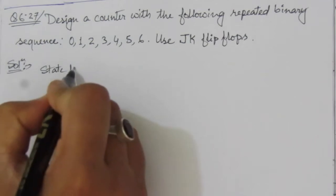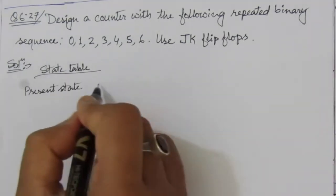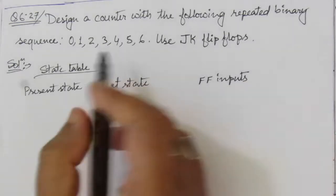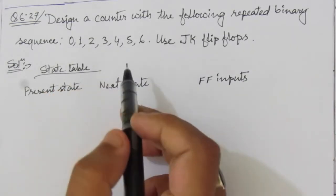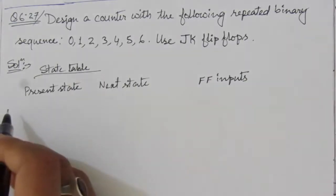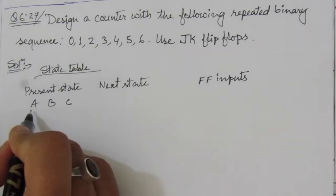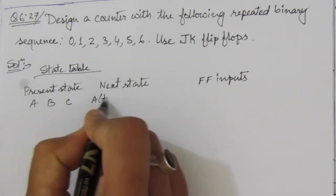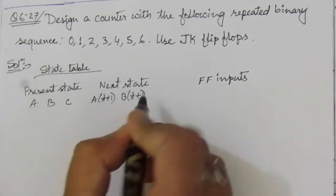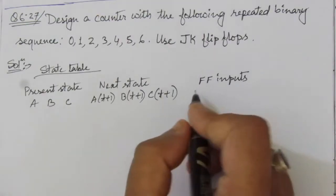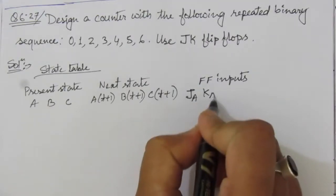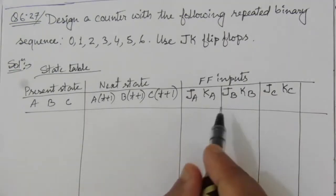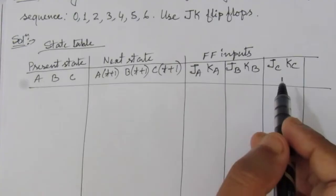First, let us find out the state table. We have present state, next state, and flip-flop inputs. The maximum count is 6, which can be represented with a minimum of 3 bits. So we consider 3 bits: A, B, C, where A is the most significant bit and C is the least significant bit. The next state columns are A(T+1), B(T+1), C(T+1), and the flip-flop inputs are JA, KA, JB, KB, JC, KC — three flip-flops in total.